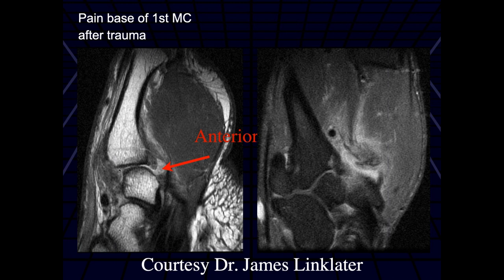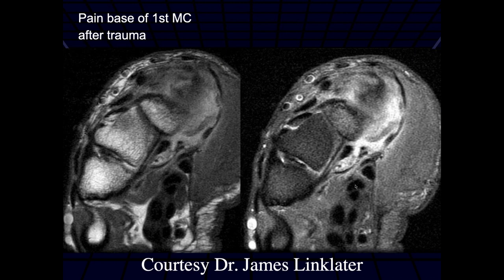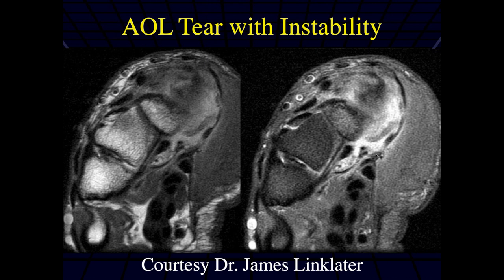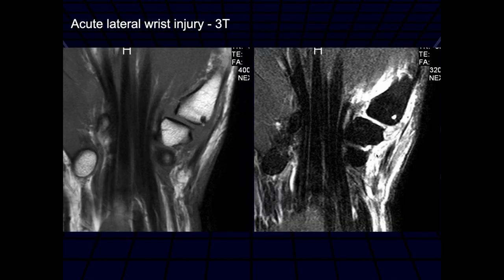I think it's really a high-grade partial tear with a lot of thickening in that posterior oblique ligament. We can see a lot of edema in the adjacent muscles, and disruption of the adjacent muscles. So this was a high-grade partial tear of the posterior oblique ligament and a complete tear of the anterior oblique ligament with strains of the adjacent muscles.